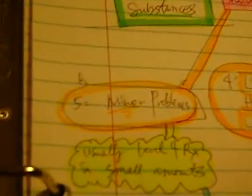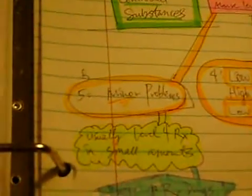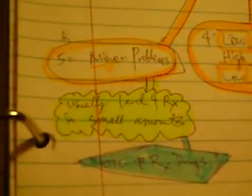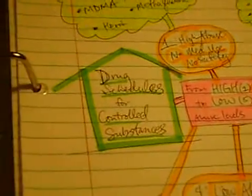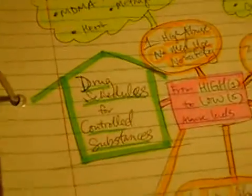And the lowest of the low are the minor problems. Number five, level five minor problems. They're usually basically level four drugs, but given in small, small, small amounts. So they're over the counter and prescription drugs, which are level five minor problem drugs. These are the drug schedules for controlled substances.